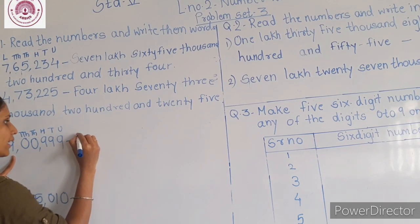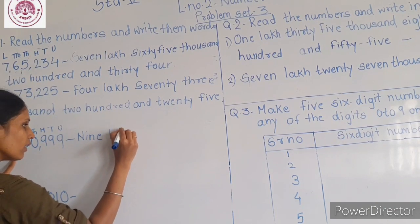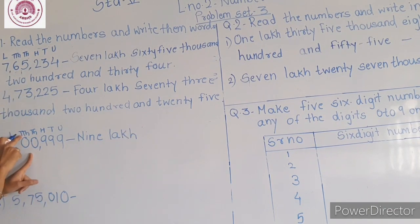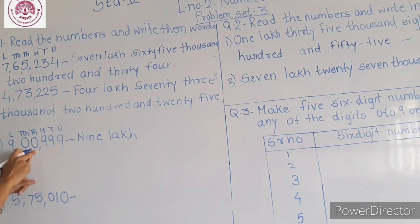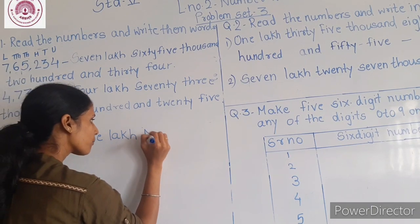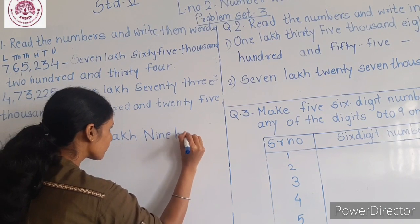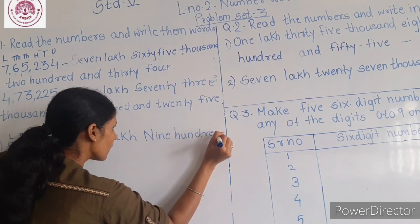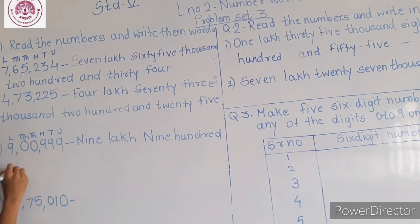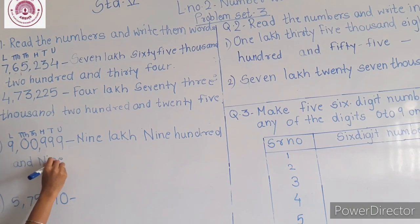Now, how will you read this number? It is 9 lakh. In the ten thousand and thousandth place it is 0, so we will skip this 0. Then we move forward: 900, 90, and 99. So the number is 9,00,999.